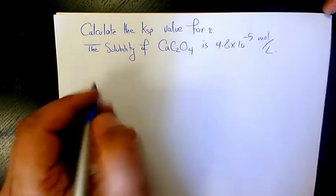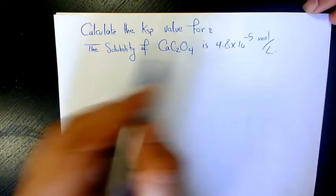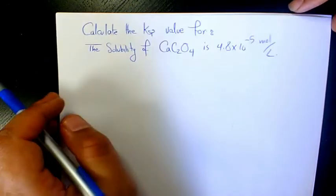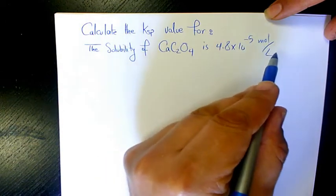What's up guys, this is Massey. Welcome to another video. In this video I want to find out the Ksp value for the solubility of calcium oxalate, which is 4.8 times 10 to the power of negative 5 mole per liter.